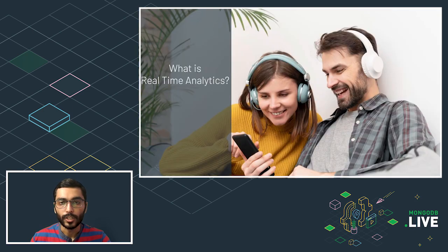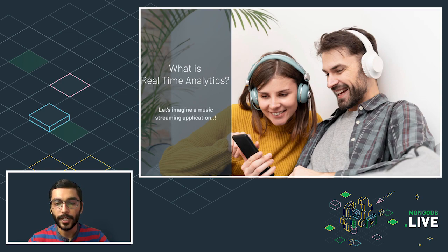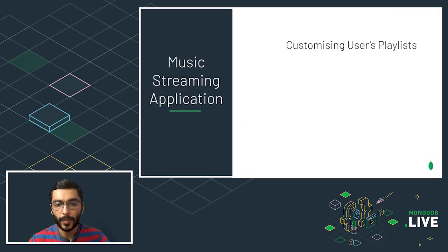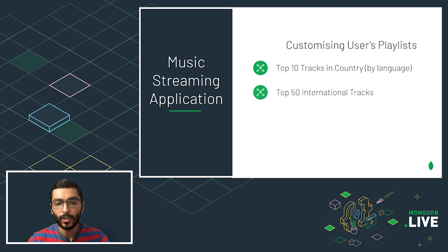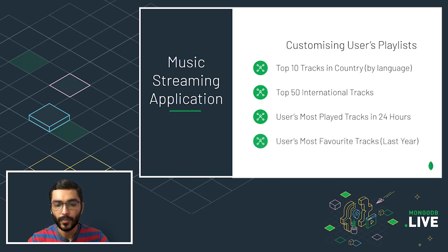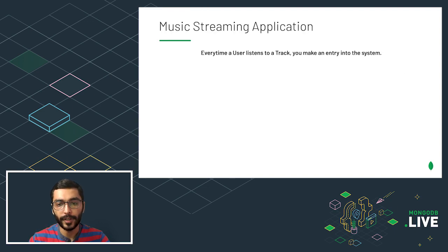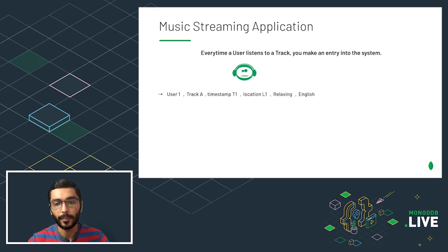The biggest question remains: what is real-time analytics? Let's imagine a music streaming application where anyone can listen to customized music playlists. There could be many different custom playlists such as top 10 tracks in a country by language, top 50 international tracks, a user's most played tracks in the last 24 hours, or a user's most favorite tracks in the last year. Every time a user listens to a track, an entry is made — for example, user 1 listening to track A at time T1, location L1, of type 'relaxing' and in English.